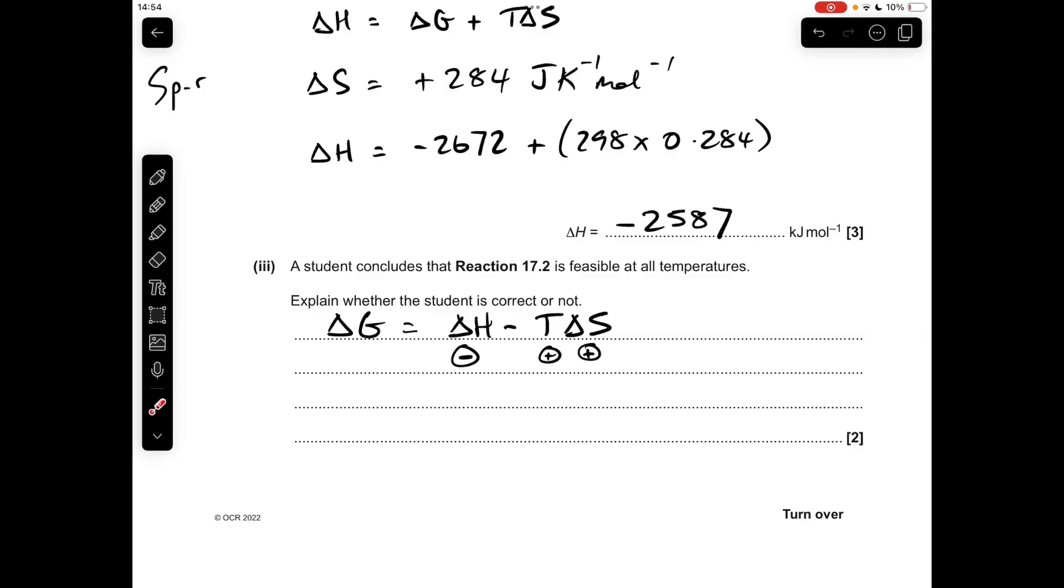And we calculated ΔS to be positive up here. So effectively, you're combining two negative terms here because that minus sign will stay a minus sign. So you're combining a negative ΔH with a negative TΔS, so ΔG will always be negative, so the student was correct.